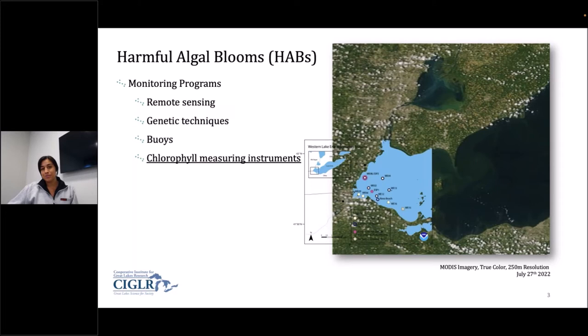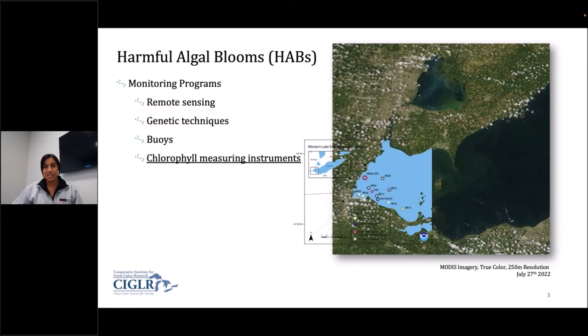So it's important to establish monitoring programs, and there are some great monitoring programs out in the Western Basin of Lake Erie. You can see we have sampling sites overlaid on top of the MODIS imagery showing approximate locations of these sampling sites that are visited pretty regularly throughout the summer, which is bloom season. These monitoring programs use a collection of different techniques to get a robust idea of what is happening within the water: remote sensing, genetic techniques using genomics and genetics, and buoys and chlorophyll measuring instruments — things that go in the water to see what is happening. That is what we'll be talking about today.